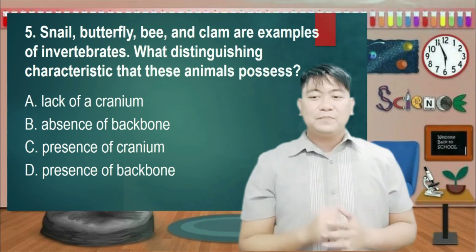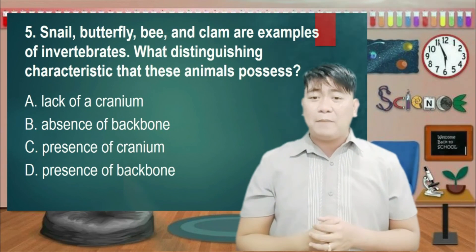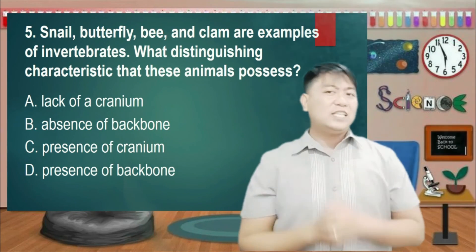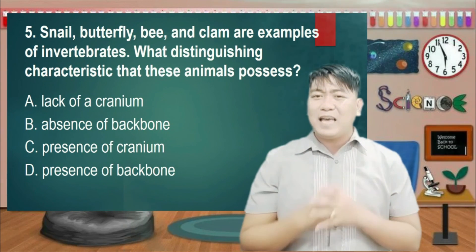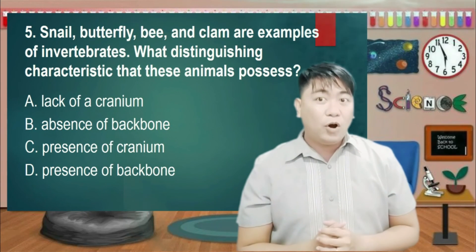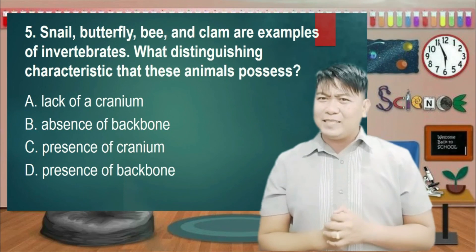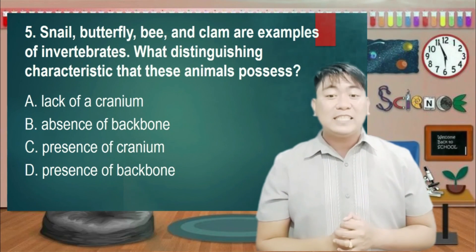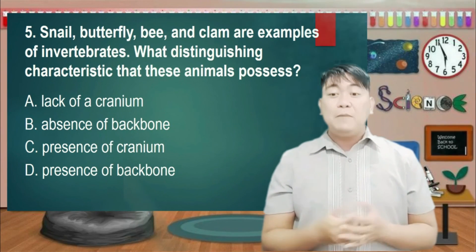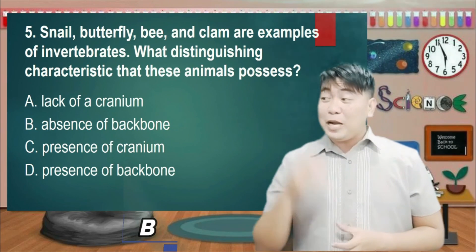Number 5: Snail, butterfly, bee, and clam are examples of invertebrates. What distinguishing characteristic do these animals possess? A. Lack of a cranium. B. Absence of backbone. C. Presence of cranium. D. Presence of backbone. And the answer is... Letter B.